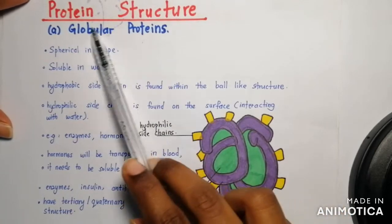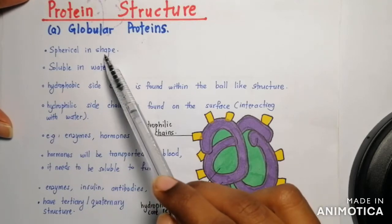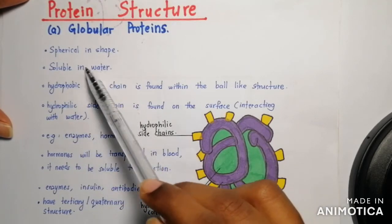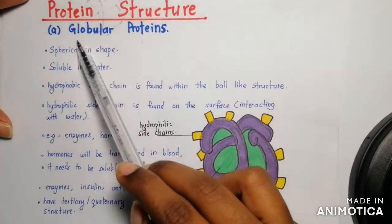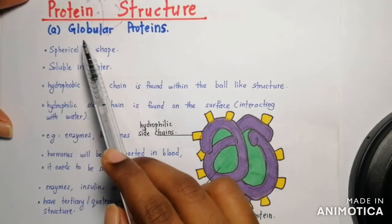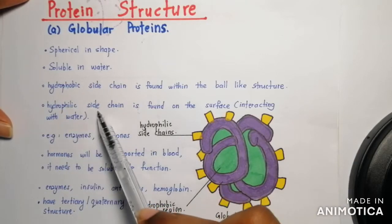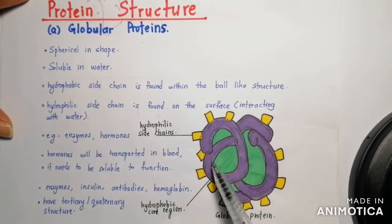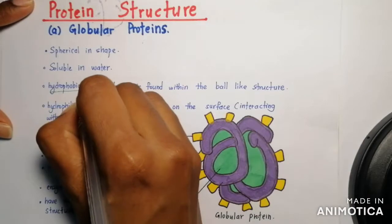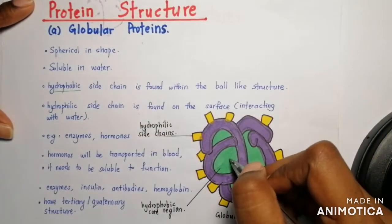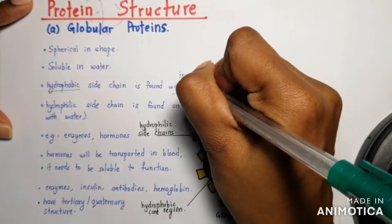In today's video we will study globular proteins. Globular proteins are spherical in shape and they are soluble in water. The name 'globular' reflects its globe-like form. Globular proteins are soluble in water because they have hydrophilic side chains found on the surface, whereas the hydrophobic side chain is found within the ball-like structure, also known as the inner core.